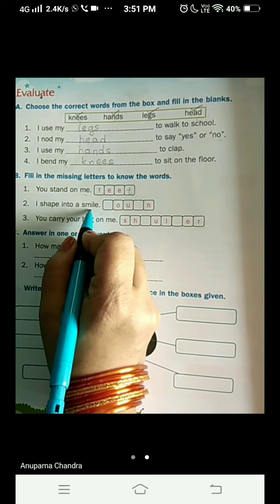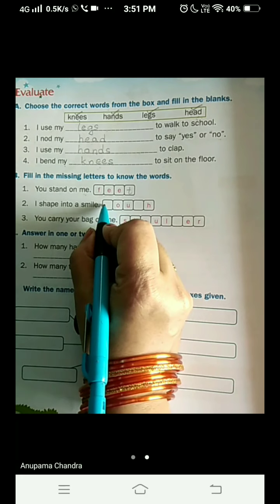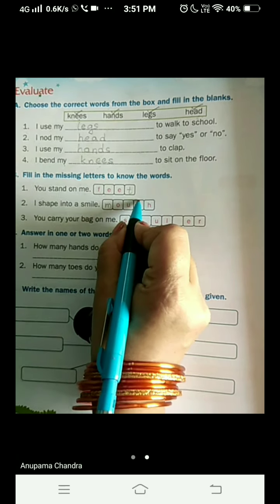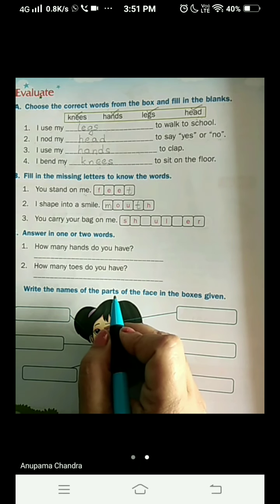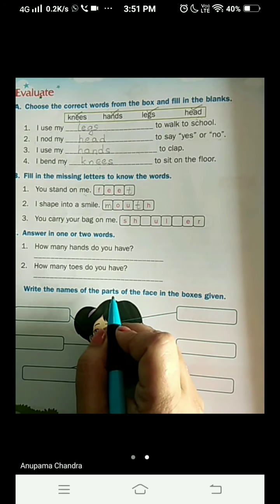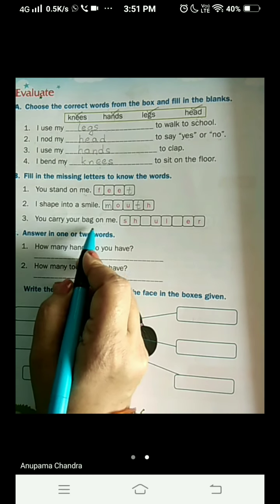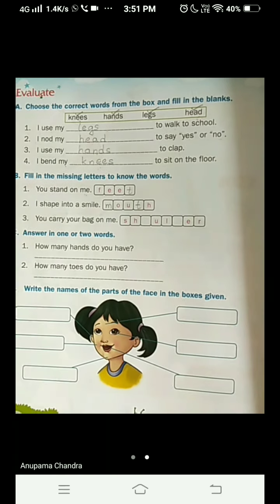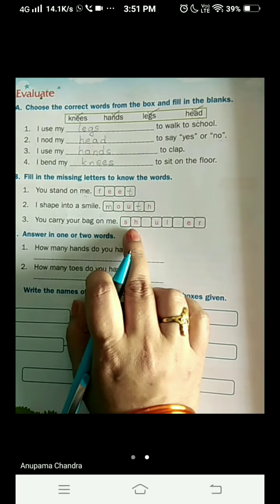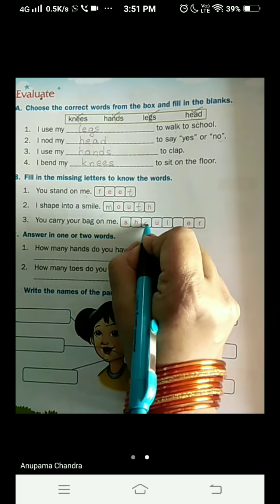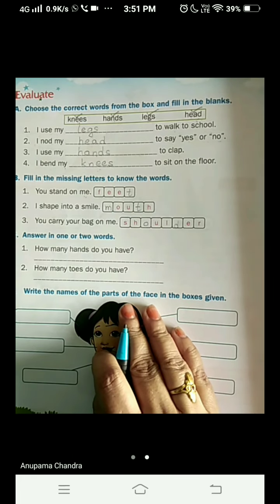Second one, I shape into a smile. And what is the answer? Mouth. M O U T H, mouth. Mouth shapes into a smile. Come to the third one. You carry your bag on me. Where do you carry your bag children? On your shoulder. S H O U L D E R, shoulder.